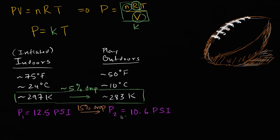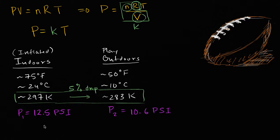This is what some of the initial analyses did: they said something clearly shady happened, because temperature by itself should only account for a 5% drop in pressure, but there was a 15% drop. Maybe some air was let out. But there was actually a mistake in that initial analysis. Gauge pressure — the 12.5 PSI — is not the absolute pressure. Gauge pressure measures how much more pressure there is inside the ball than outside.